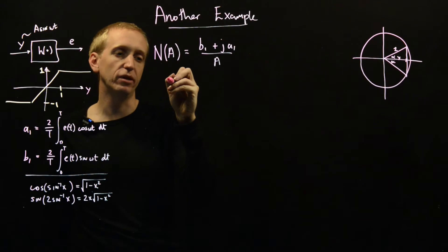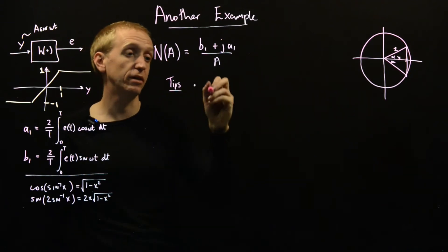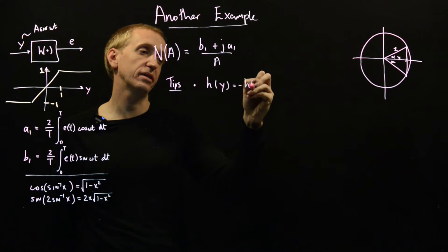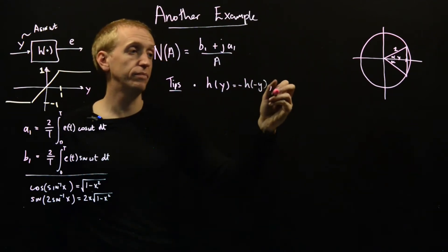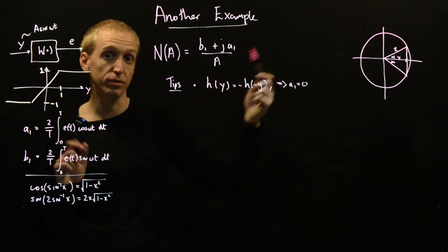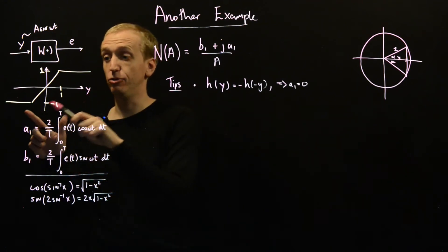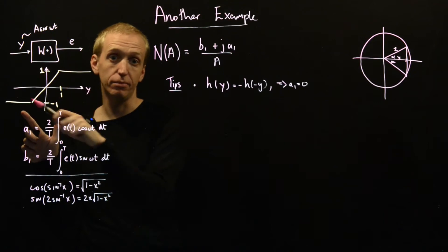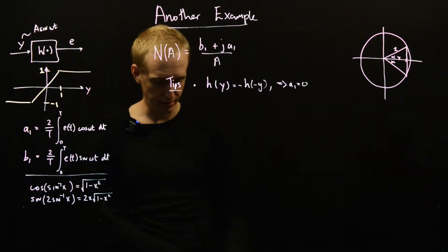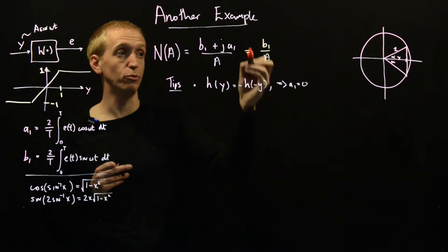There are a few tips to make our life easier. The first: if the nonlinearity is static and odd — meaning h(y) equals minus h(minus y) — this implies that a1 is equal to 0. In fact, all of the a Fourier coefficients are equal to 0. This is a nice trick since you very often deal with odd nonlinearities. So our describing function simplifies to b1 over a, and all that remains is to find b1.